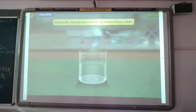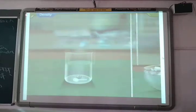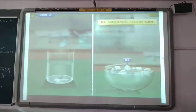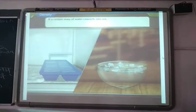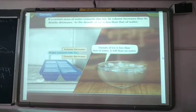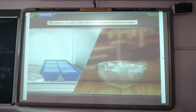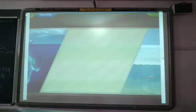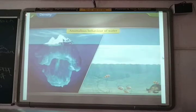As we have seen, generally liquids have lower densities than solids. But ice, being a solid, floats on water. Why does this happen? If a certain mass of water converts into ice, its volume increases. Thus, its density decreases. As the density of ice is less than that of water, it will float on water. This property of water is also called the anomalous behavior of water.